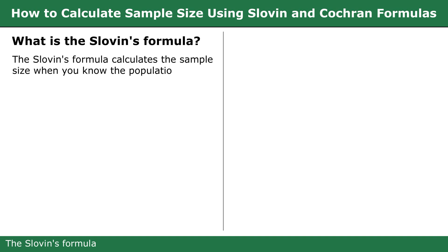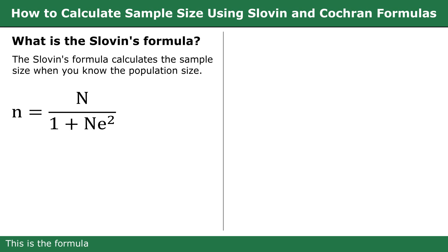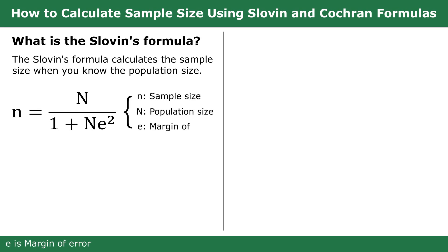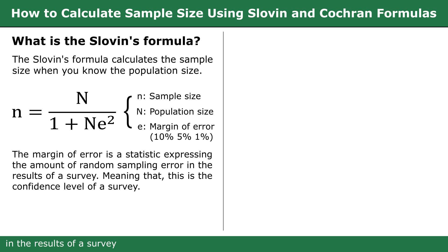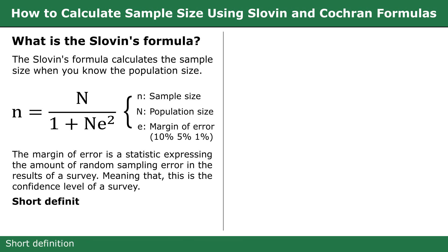The Slovin formula calculates the sample size when you know the population size. This is the formula. Small n is sample size, big N is population size, small e is margin of error, and the confidence level can be 10%, 5%, and 1%. The margin of error is a statistic expressing the amount of random sampling error in the result of a survey, meaning that this is the confidence level of a survey.